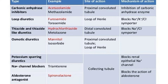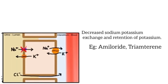These drugs act in the collecting tubules. One subclass is sodium channel blockers — they block the renal epithelial sodium channel (ENaC), preventing sodium ions from being reabsorbed. This decreases the sodium-potassium exchange, causing retention of potassium, which is a side effect. Examples are amiloride and triamterene.